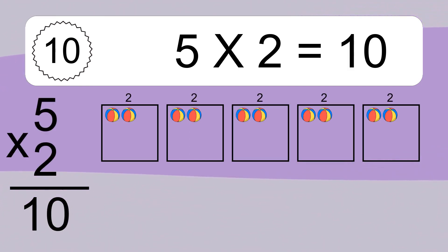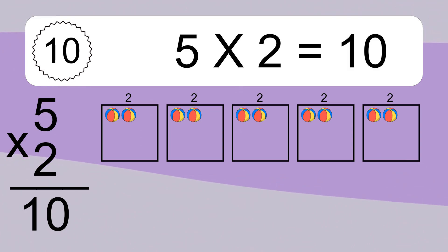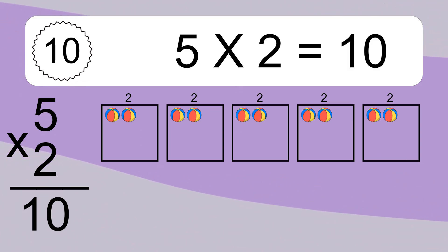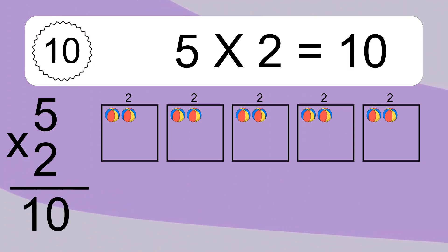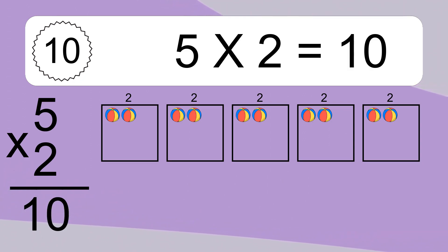We have 5 boxes, and each box has 2 colorful balls inside. If you count all the balls in all the boxes together, you will have 5 times 2 balls. This equals 10 balls.